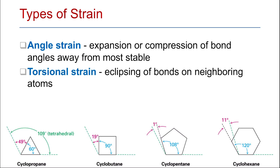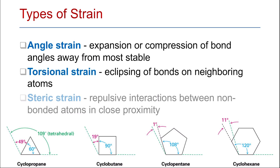The second type is torsional strain, which is the eclipsing of bonds on neighboring atoms. The third type of strain is steric strain, which is the repulsive interaction between non-bonded atoms in close proximity. The difference between torsional strain and steric strain is that torsional strain can be seen between groups on neighboring atoms, while steric strain can be seen between groups on non-neighboring atoms.